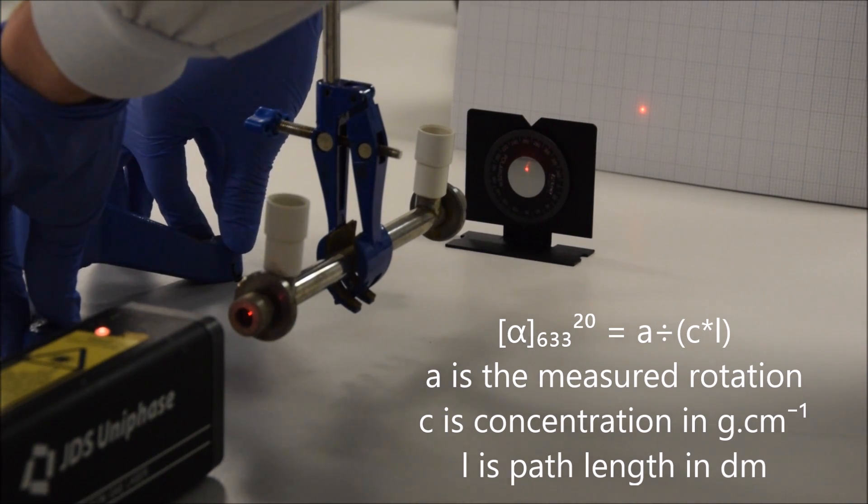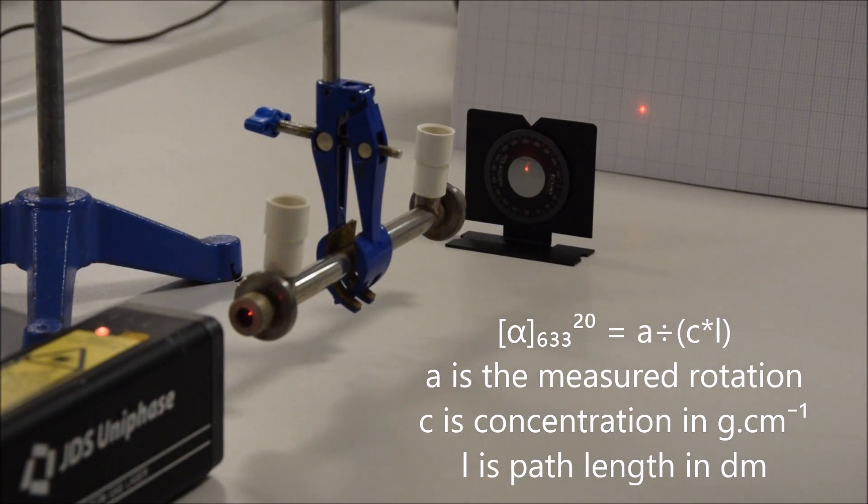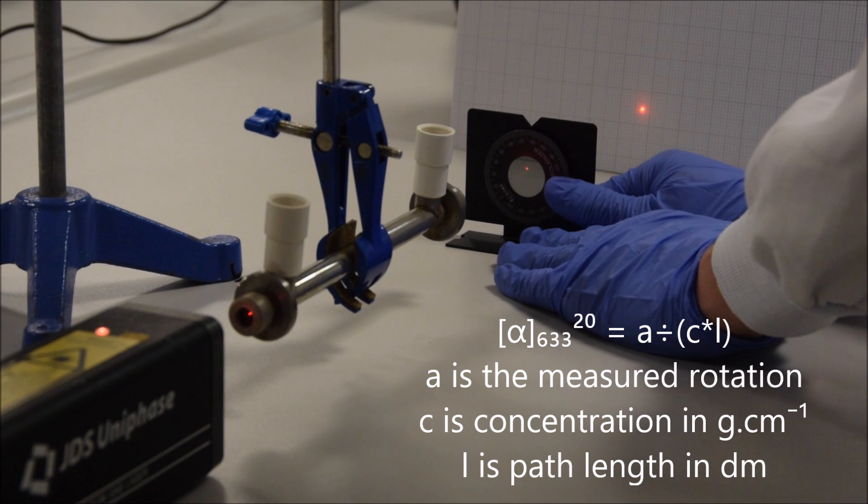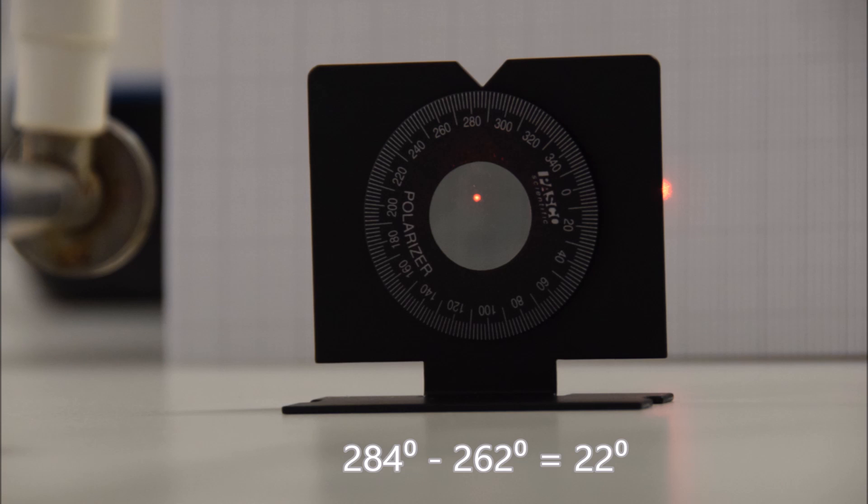This is because the plane of polarization has turned and so the polaroid is not lined up exactly to cut out all the light. If we rotate it, we can find an angle where the light is going to be cut. The light is still polarized, it has just changed the angle of its polarization. If we find this angle now and measure it, we can see that if we take our initial angle from our final angle, we can get the difference. And this is our rotation.